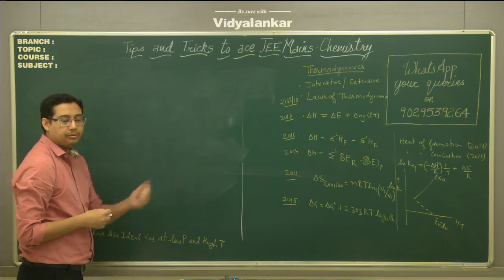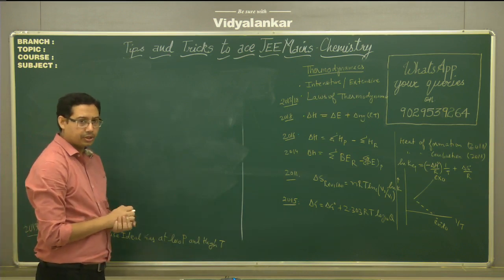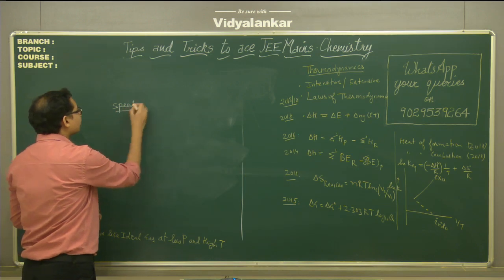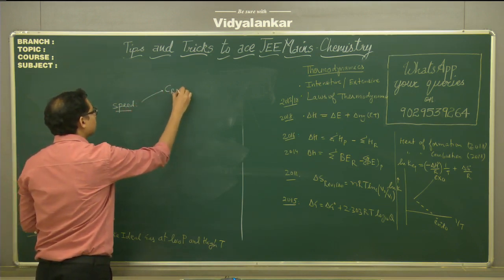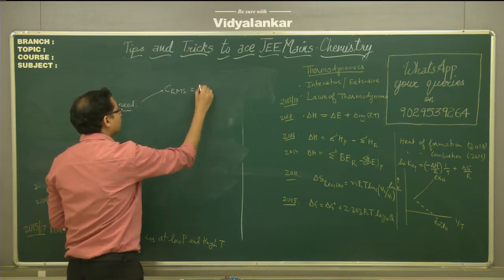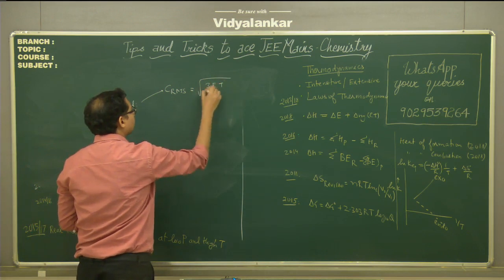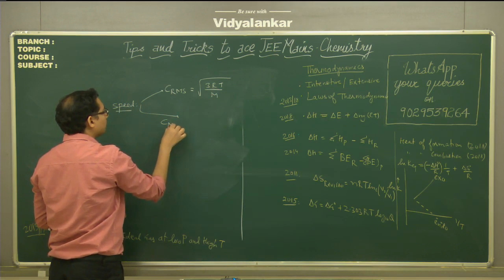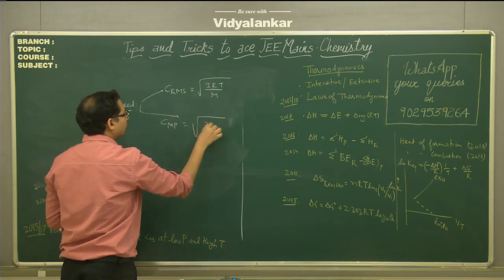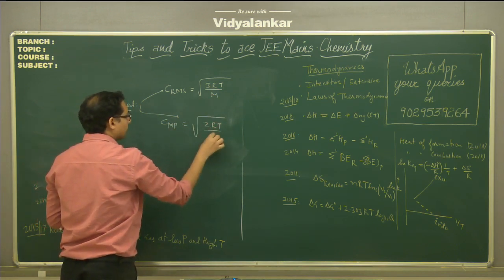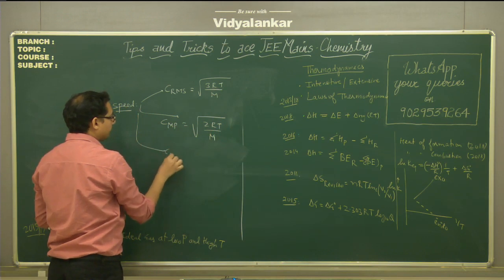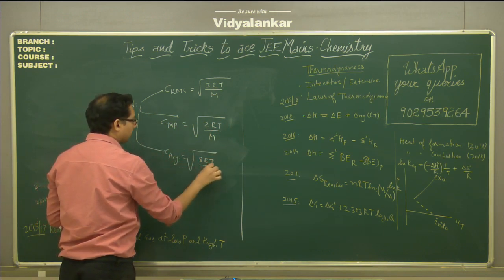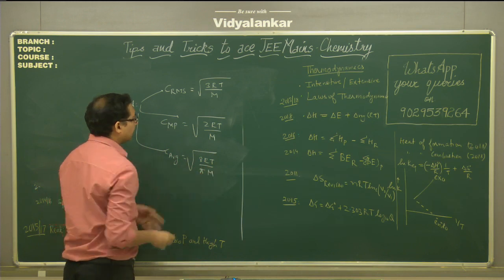Questions can also be asked on molecular speeds. We can have root mean square speed, which equals the square root of 3RT/M. Most probable speed equals the square root of 2RT/M. And average speed equals the square root of 8RT/πM.